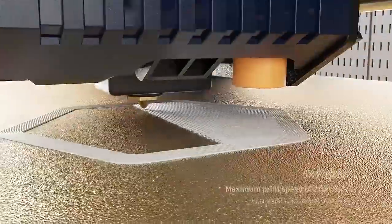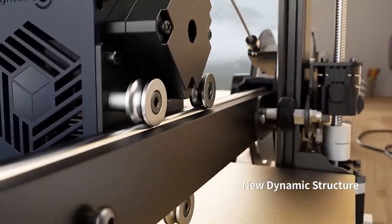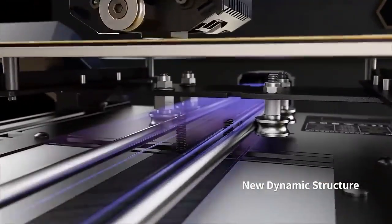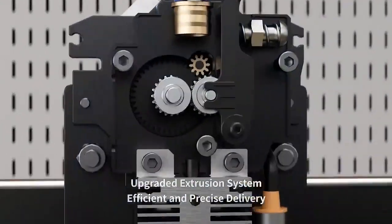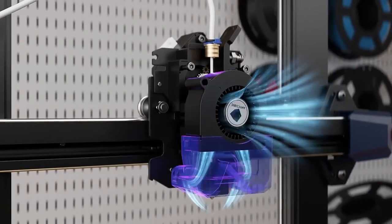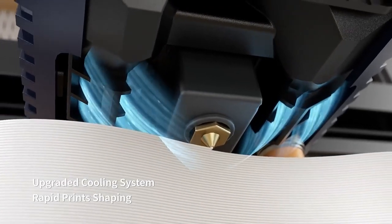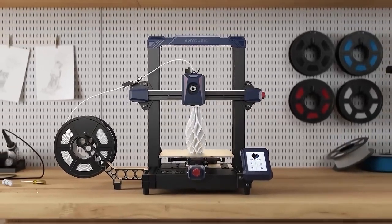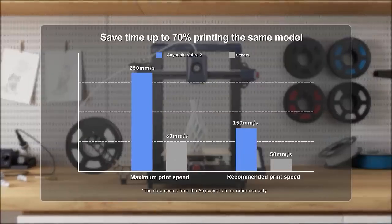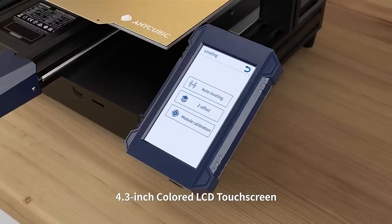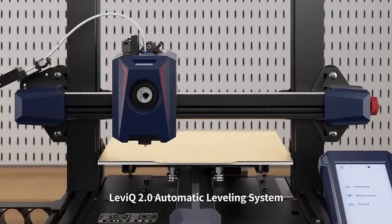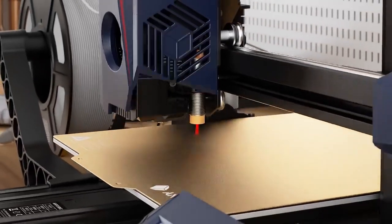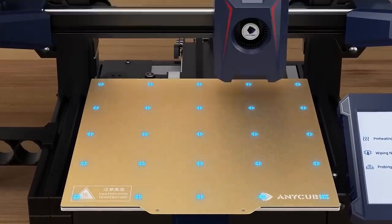Number three: Anycubic Cobra 2 is a 3D printer model produced by Anycubic, a well-known manufacturer in the 3D printing industry. While I don't have real-time access to the latest product releases or updates, as of my last update, Anycubic Cobra 2 hadn't been introduced yet. However, Anycubic is known for producing quality 3D printers with user-friendly features and competitive pricing. If the Cobra 2 is indeed a new model, it's likely to come with improvements over its predecessors, possibly including enhanced print quality, faster printing speeds, larger build volume, or additional features for user convenience. It might be worthwhile to check out reviews or updates directly from Anycubic or trusted 3D printing communities to learn more about its specifications and performance.